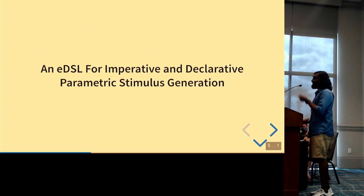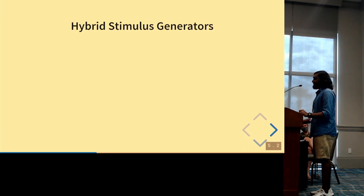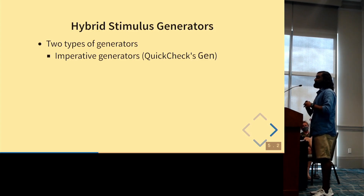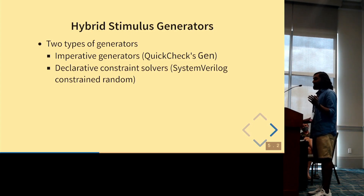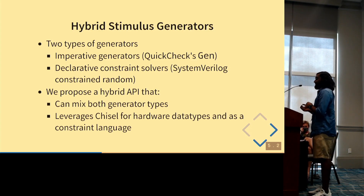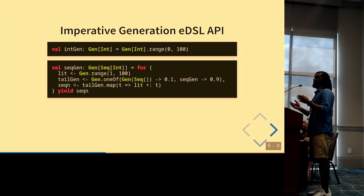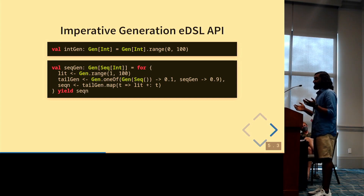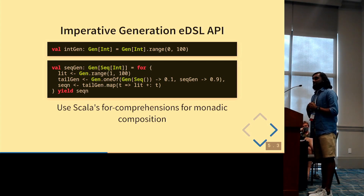The second EDSL is for imperative and declarative parametric stimulus generation. There are two types of stimulus generators: imperative generators similar to the gen monad from QuickCheck, and declarative constraint solvers similar to SystemVerilog's constrained random support. This proposes a hybrid API that mixes both generator types and leverages Chisel for hardware data types and as a constraint language. For example, generating an integer in a particular range at the Scala level, or generating a sequence with an average length of 10 where each element is a value from 1 to 100, using Scala's for-comprehension syntax for monadic composition.